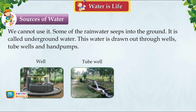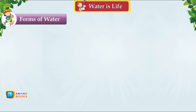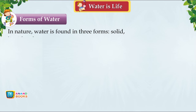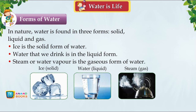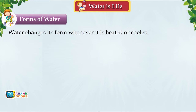Forms of Water. In nature, water exists in three forms: solid, liquid and gas. Ice is the solid form, drinking water is the liquid form, and steam or water vapour is the gaseous form. Water changes form when heated or cooled: water when heated becomes steam; ice when heated becomes water; water when cooled becomes ice.